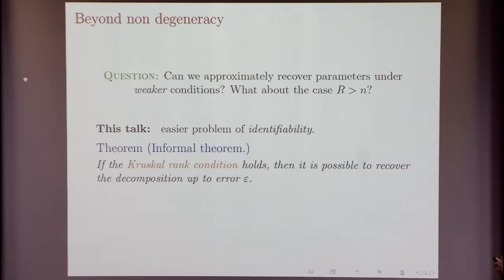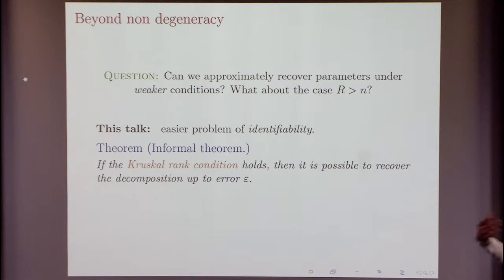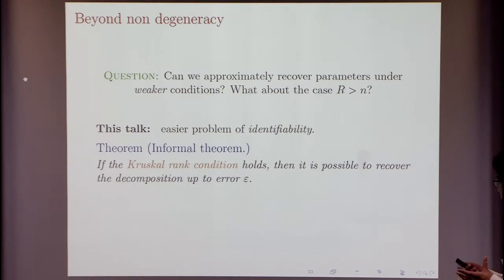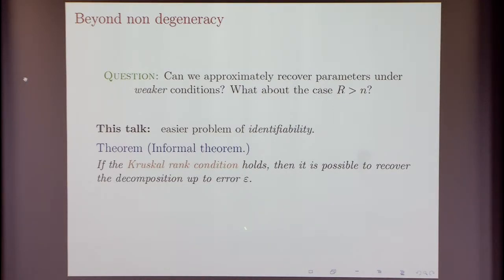In this talk I will be concerned with identifiability, which is somewhat like uniqueness. The informal theorem I'll prove is that if something called Kruskal's rank condition holds, then it is possible to recover the decomposition up to any desired accuracy ε. This will be the main result of the talk.